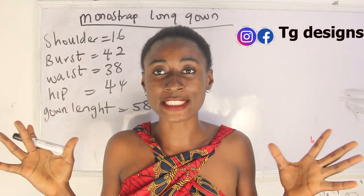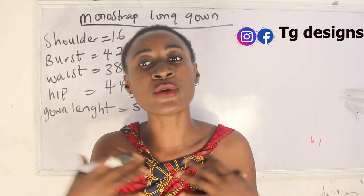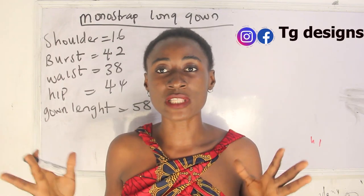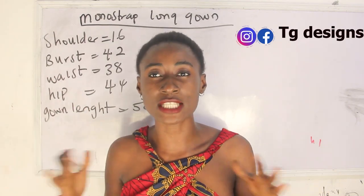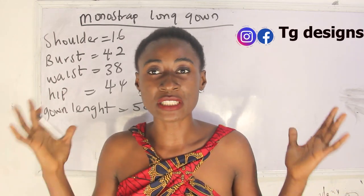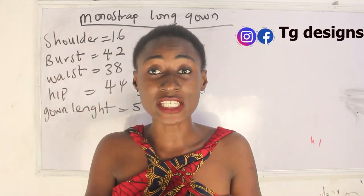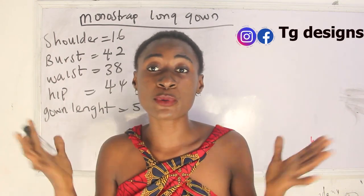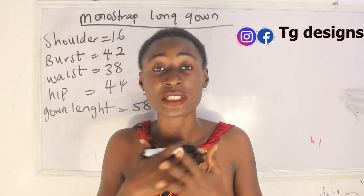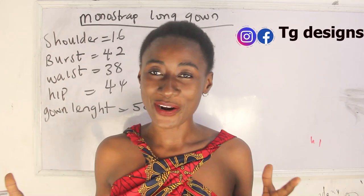The basic measurements required are: shoulder, bust, waist, hip, and gown length. You might ask about shoulder-to-nipple, nipple-to-nipple, shoulder-to-underbust, and so on. But if you've watched my previous video on how to achieve your size chart, you'll understand that you can make your dress with just basic measurements. I'm going to put the link of the size chart video on the screen. A comprehensive size chart is also available — details are in the description box.